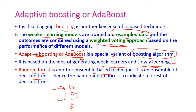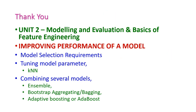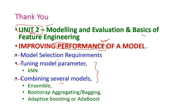So far we have seen improving the performance of your model, which is the last topic of the first chapter in the second unit. We covered model selection requirements, tuning model parameters, and combining several models using ensemble methods. By using these two approaches, the performance of a model will definitely get improved. From the next class we will move to the next chapter in the second unit: basics of feature engineering.